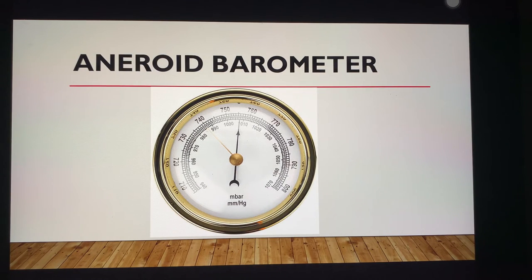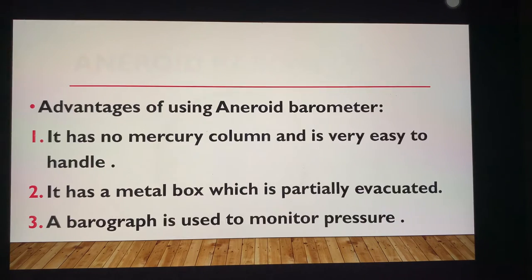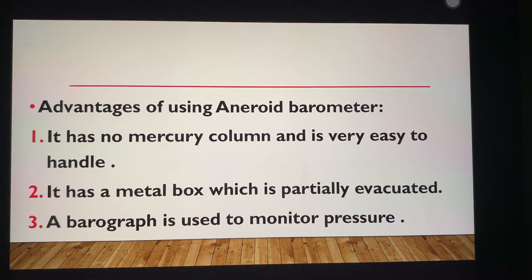Then we have the aneroid barometer. Since the mercury barometer is very large and not portable, the aneroid barometer is used instead. Its advantages: number one, it has no mercury column and is very easy to handle. Second, it has a metal box which is partially evacuated — not completely, only partially. A barograph is used to monitor pressure continuously. The box is very sensitive to variation in air pressure — it expands when pressure is low and gets compressed when pressure is high. The box is connected to a pointer which moves over a scale to indicate the atmospheric pressure.